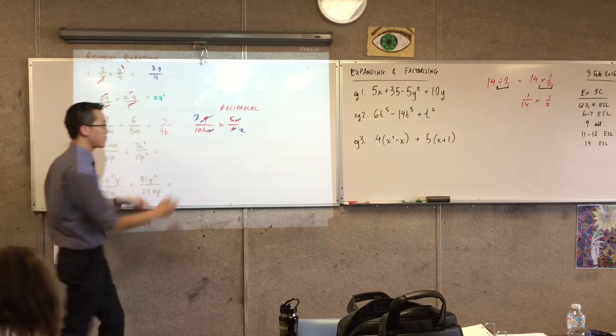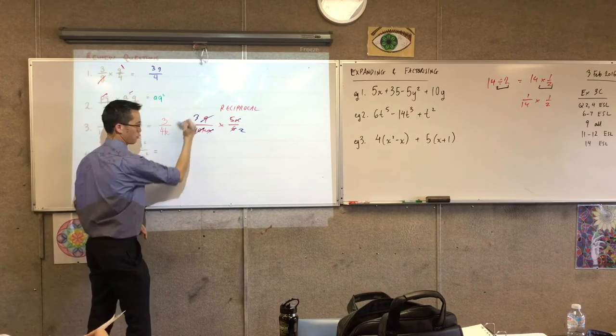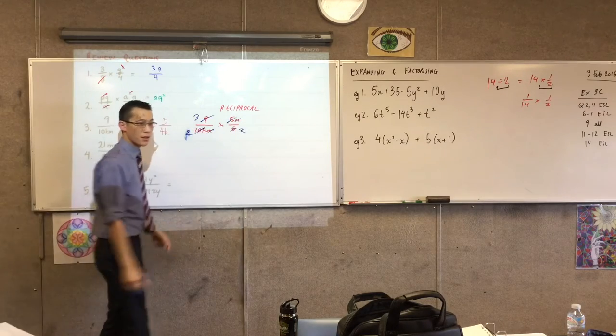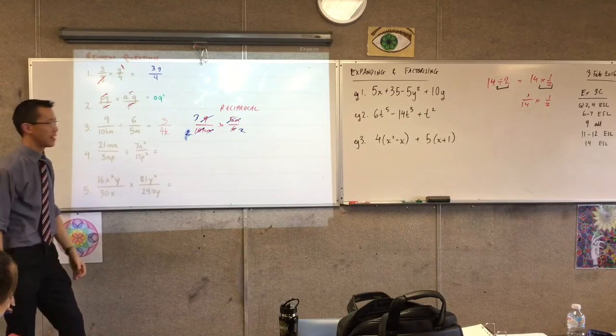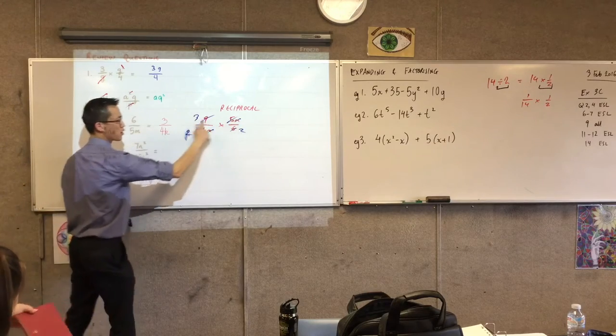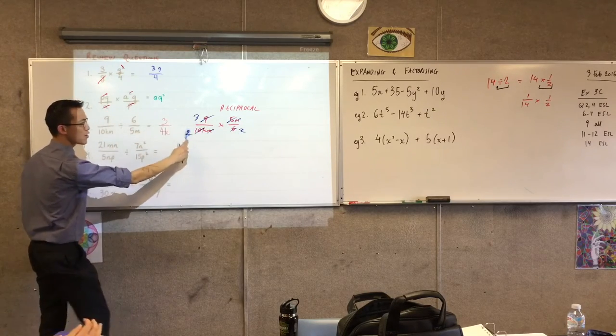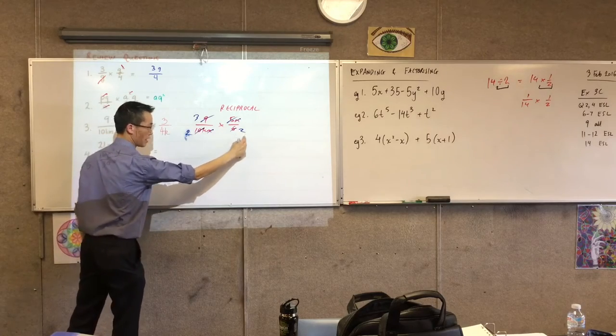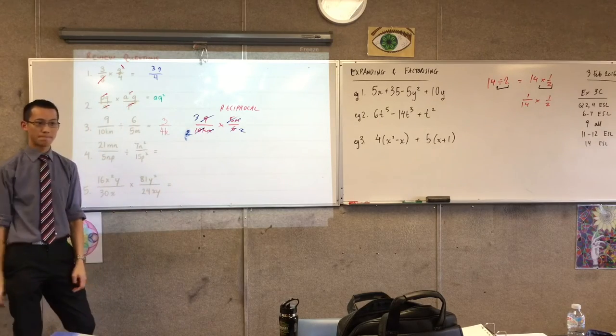What other things can I cancel? The 5 and the 10, both multiples of 5. So I divide both of those. Is there anything left? There's nothing left. Everything on the top is gone except for the 3. Here you've got 2, K and 2. And that gives you the 4. Make sense?